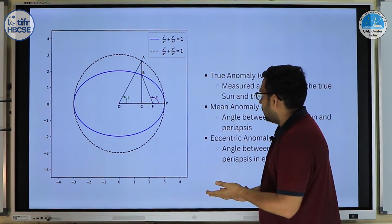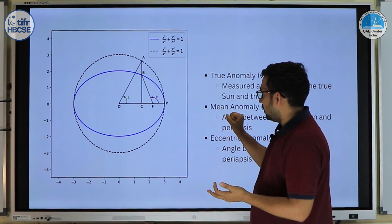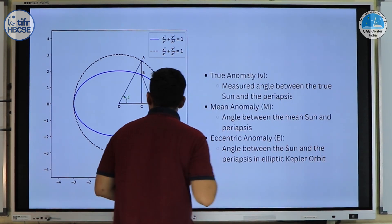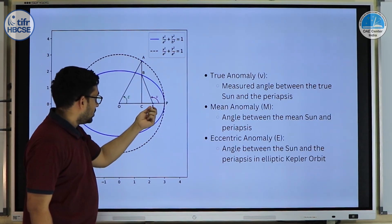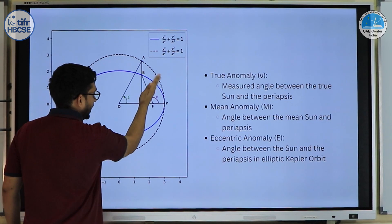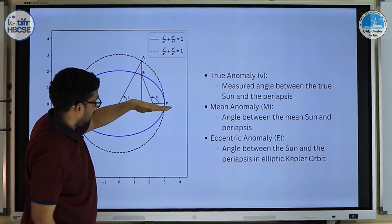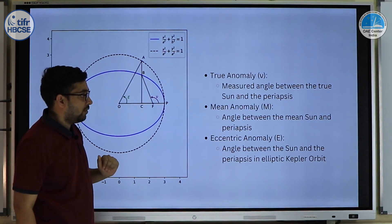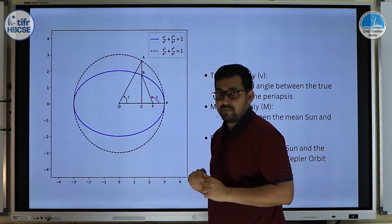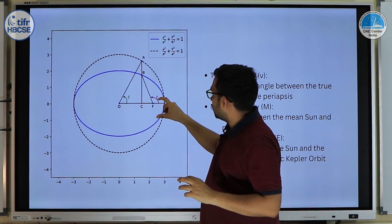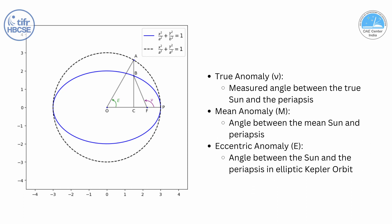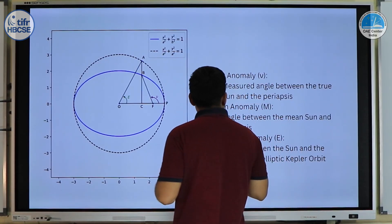To understand exactly how these parameters affect the equation of time and the analemma, we need to understand some geometric angles related to elliptical orbits. The true anomaly is the angle from perihelion to the planet's current position, as seen from the Sun at the focus. The eccentric anomaly is found by projecting the planet's position onto a circle of radius equal to the semi-major axis. These two are related based on the orbit's eccentricity.